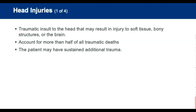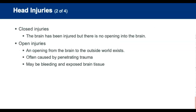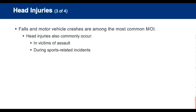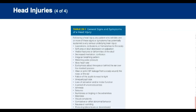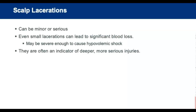A head injury is a traumatic insult to the head that may result in injury to soft tissue, bony structures, or the brain. Head injuries account for more than half of all traumatic deaths, and fatal injuries invariably involve the brain. Be alert to the fact that the patient may have sustained additional trauma. There are generally two types of head injuries: closed head injuries, in which the brain has been injured but there is no opening into the brain, and open head injuries, in which an opening from the brain to the outside world exists — often caused by penetrating trauma, and brain tissue may be exposed. Falls and motor vehicle crashes are the most common mechanisms of injury, and common mechanisms also include assaults and sports-related incidents.